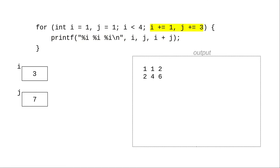The action increases i to 3, and j to 7. i is still less than 4, and we print i, j, and i plus j: 3, 7, and 10.